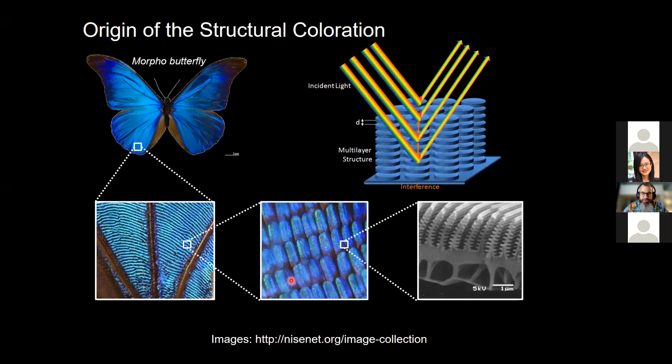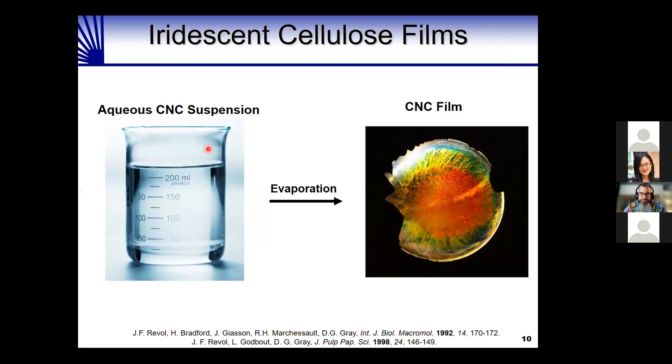Maybe the most famous example of structural coloration from nature is the morpho butterfly. It has beautiful blue iridescent wings, but if you hold it up to bright light there's no blue pigment — it actually looks pale brown. The blue color comes from chitin features on the surface of the wing spaced by about 400 to 500 nanometers, which leads to selective diffraction of blue light through constructive interference.